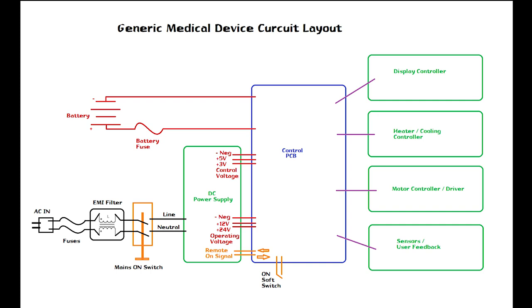Your power line coming in—it's going to have fuses someplace, an EMI filter, maybe a mains power switch, maybe not. You're going to have usually a DC power supply, which could be a part of your control PCB, you never know. And you could have an on-off switch that's a soft switch, which is basically just a signal. It doesn't actually disconnect the device from mains.